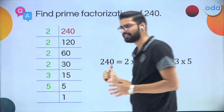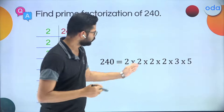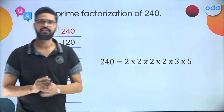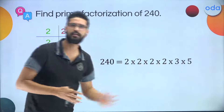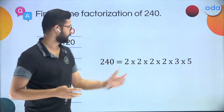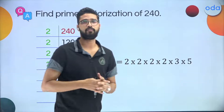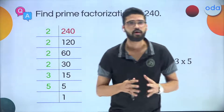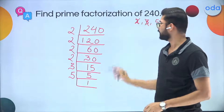Writing 2 × 2 × 2 × 2 × 3 × 5 is quite troublesome. There should be a shortcut. There is another way of writing this using something called powers or exponents. For example, if I need to express a repeated multiplication, I can write it in a much shorter form.